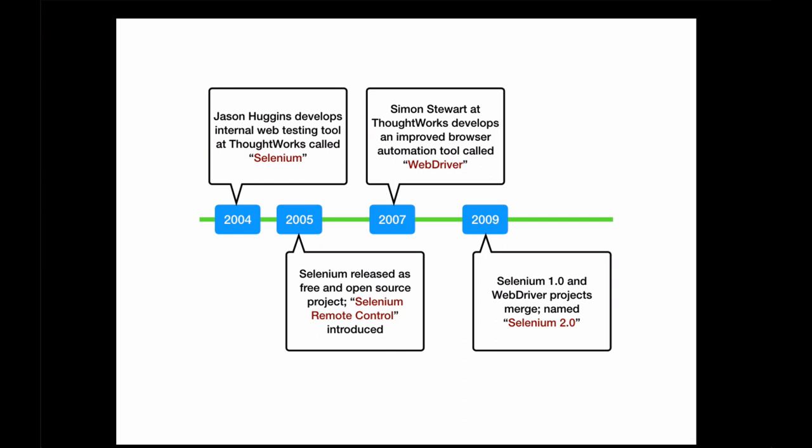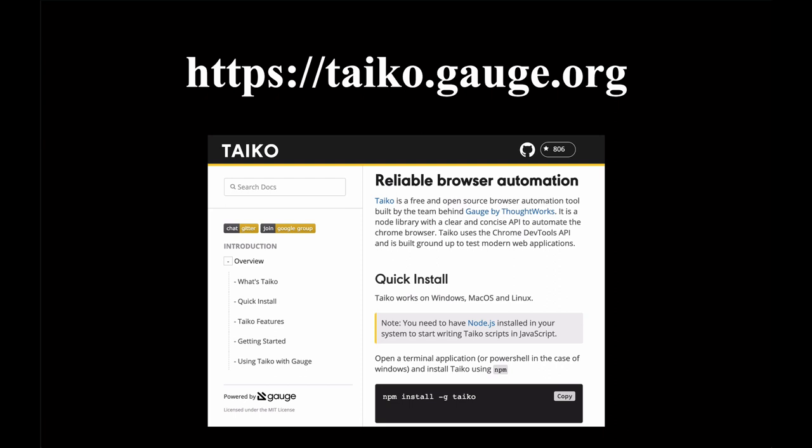You might be familiar with Selenium, a free and open-source browser automation tool that ThoughtWorks released way back in 2004. Simon Stewart released a free and open-source tool called WebDriver back in 2007, and the two projects merged in 2009. So Tyco is the latest in a long history of browser automation tools released by ThoughtWorks going back over 15 years.